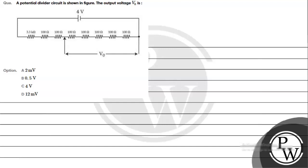Hello, let's read the given question. The question says a potential divider circuit is shown in figure. The output voltage V0 is what we're interested in calculating. Option A is 2mV, option B is 0.5mV.